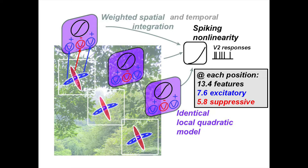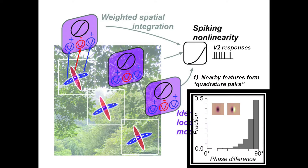It turns out that at each position we found a fairly large number of features: 13 features at each position — 7 or 8 excitatory and 6 suppressive. Of course, with longer recordings in the future there may be more features, but that's the current state. We would like to simplify this complexity and find the organizing principles. The first principle: if we look at features that together control the responses at one position, they form quadrature pairs.